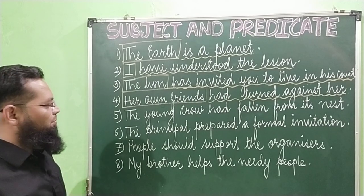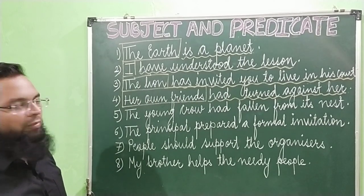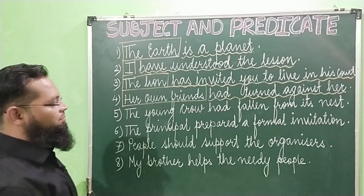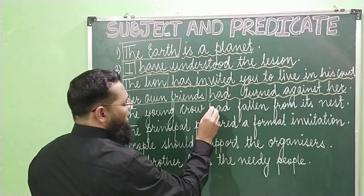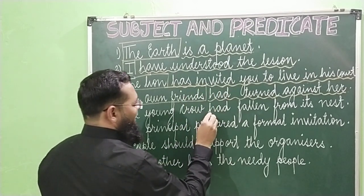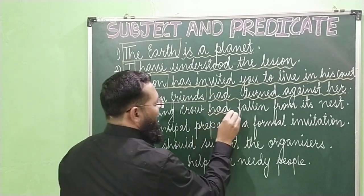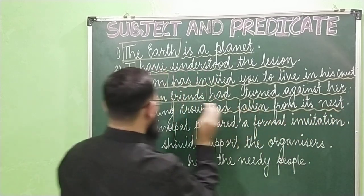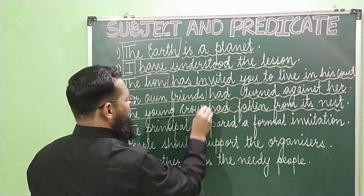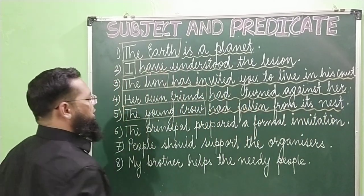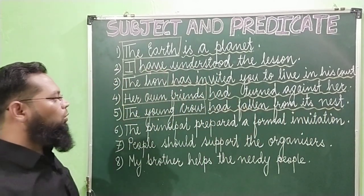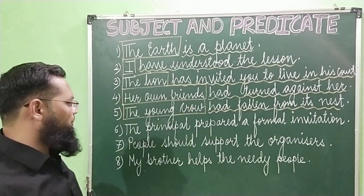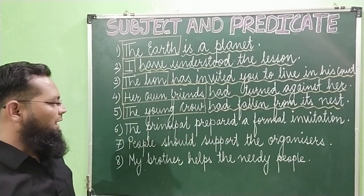Next example: 'The young crow had fallen from its nest.' Again, it is very simple — just start the predicate from the helping verb till the end. The subject will be 'the young crow,' where 'crow' is the main noun.